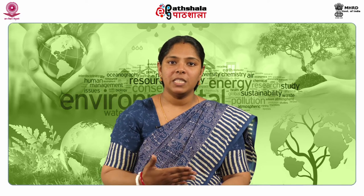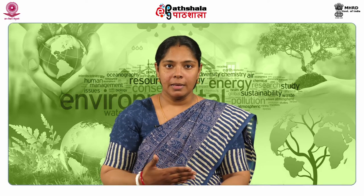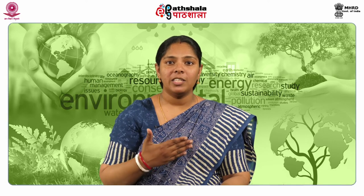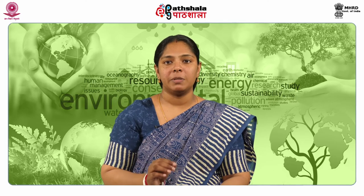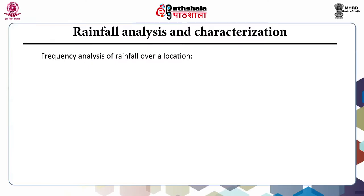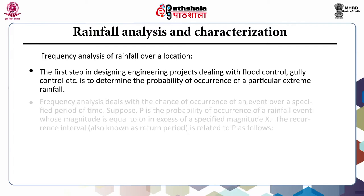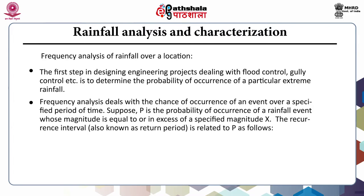The normal precipitation is the average value of precipitation at a particular date, month or year over a specified 30-year period. Thus, the term normal annual precipitation at any station is the average annual precipitation at that station based on a specified 30 years of record. The first step in designing engineering projects dealing with flood control, gully control, etc. is to determine the probability of occurrence of a particular extreme rainfall. The frequency analysis deals with the chance of occurrence of an event over a specified period of time.